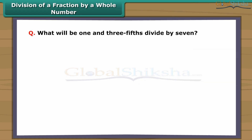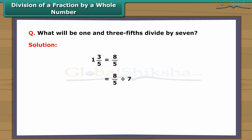What is one and three-fifths divided by seven? First convert the mixed fraction to an improper fraction, giving eight-fifths divided by seven. This equals eight-fifths multiplied by one-seventh, since one-seventh is the reciprocal of seven. The answer is eight over thirty-five.